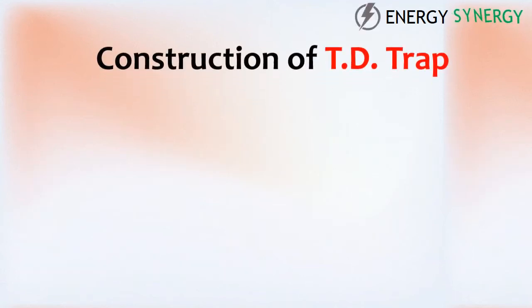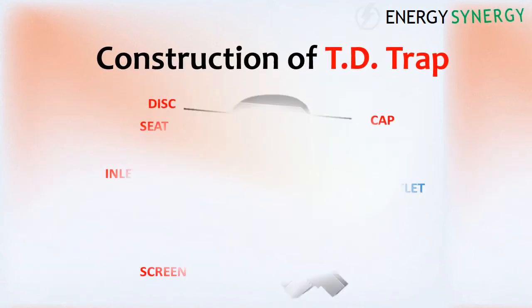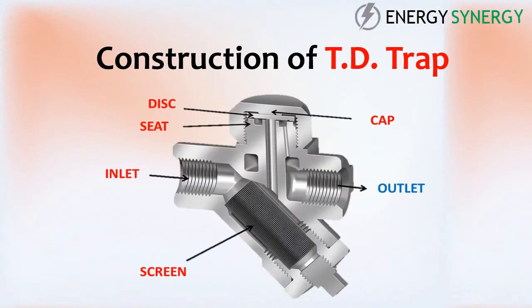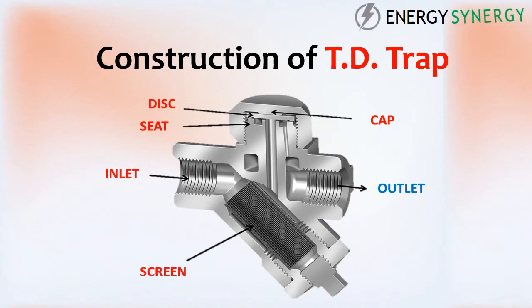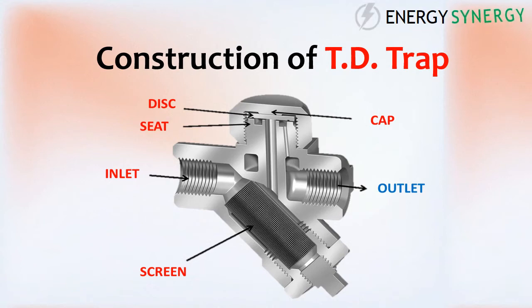Let's see the construction of a TD trap. This is the inner image of the thermodynamic steam trap. Inside there is space for condensed steam, a steam inlet, and an outlet. There is a screen between and below the inlet and outlet which catches contaminants present in the condensate.